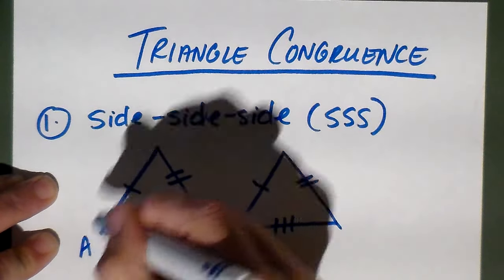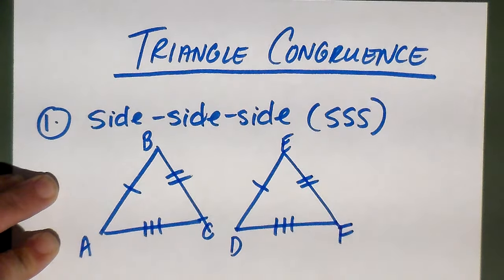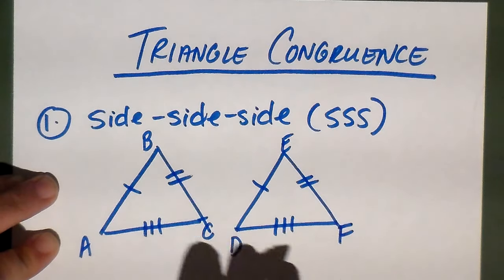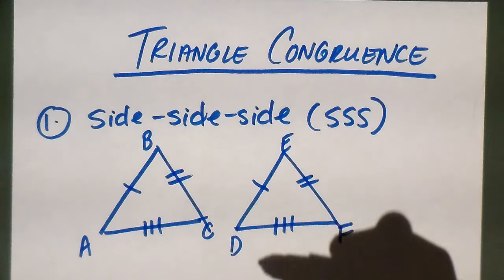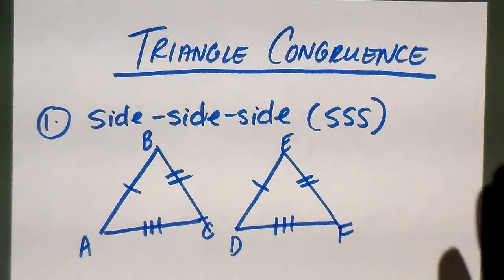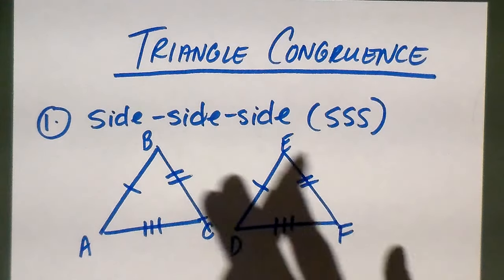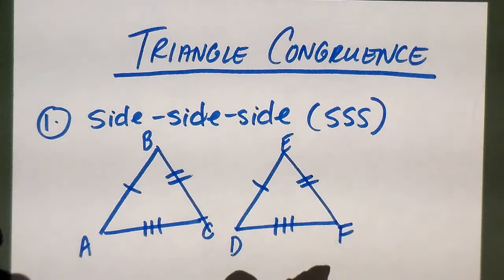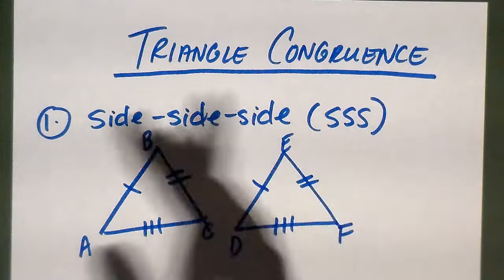When you have two triangles and you've proven that all three pairs of sides match up, that's enough information to say the two triangles are congruent. It's almost like the Wheel of Fortune — you don't need all three pairs of angles and all three pairs of sides. You just need to chip away until you have enough information to determine if the two triangles are congruent.